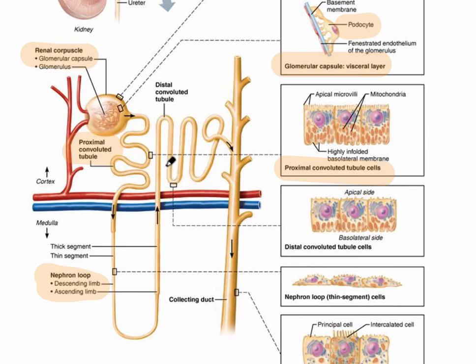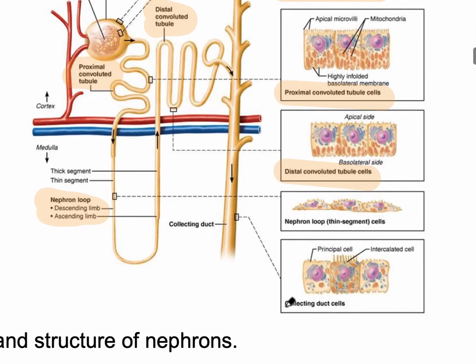The loop ascends back into the renal cortex. The next part of the renal tubule is called the distal convoluted tubule, which also has cuboidal-like epithelium, and then this leads into the collecting duct.